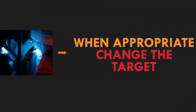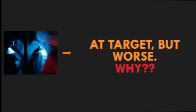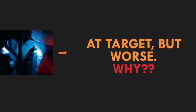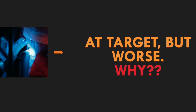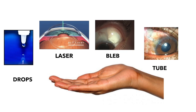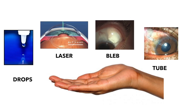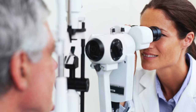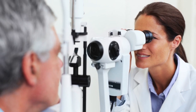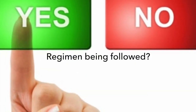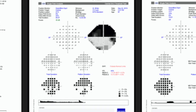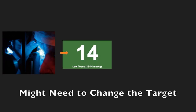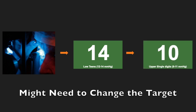Also, the clinician does not want to forget to change the target when appropriate. If glaucoma damage progresses despite the IOP being at target, clinicians need to investigate why. Is it that the patient cannot comply and we need to consider laser or surgical options to maintain the target consistently between office visits? If the regimen is being adhered to, then one needs to understand that maybe the glaucoma is still progressing despite achieving the target, and then the target IOP needs to be reset lower.